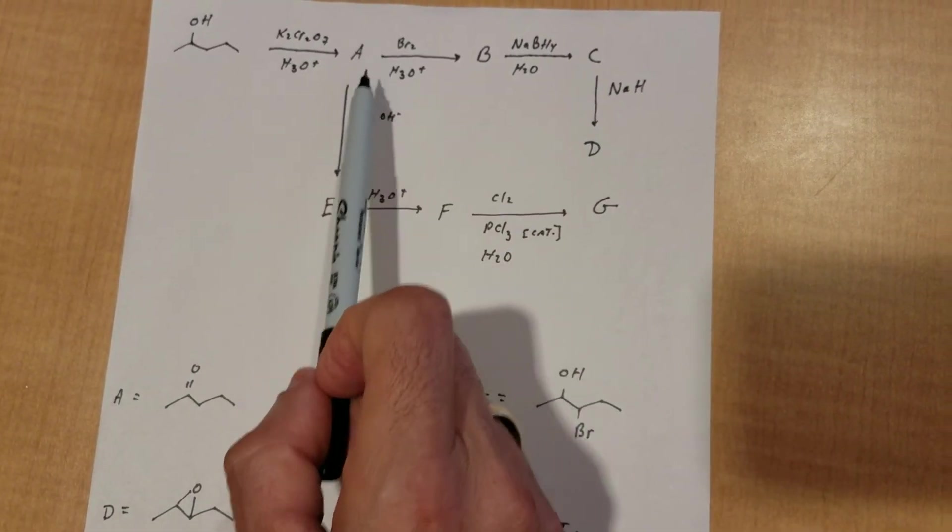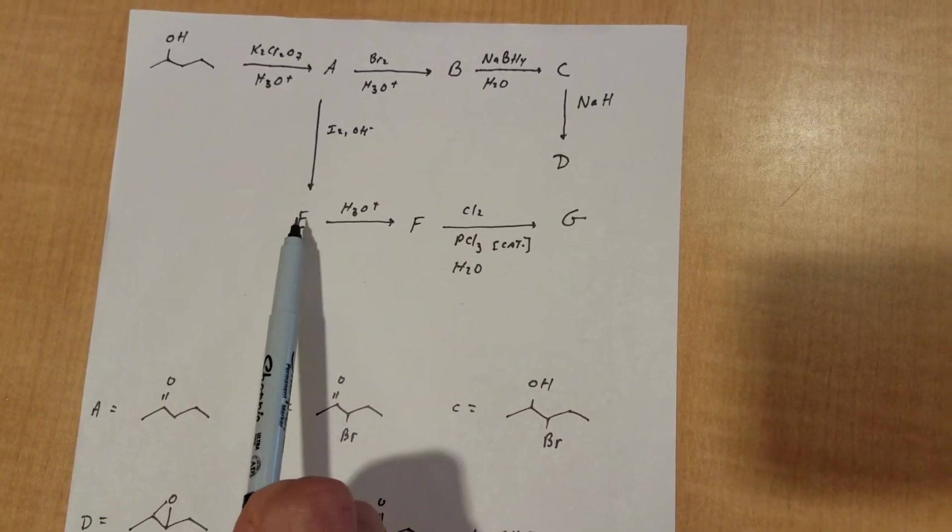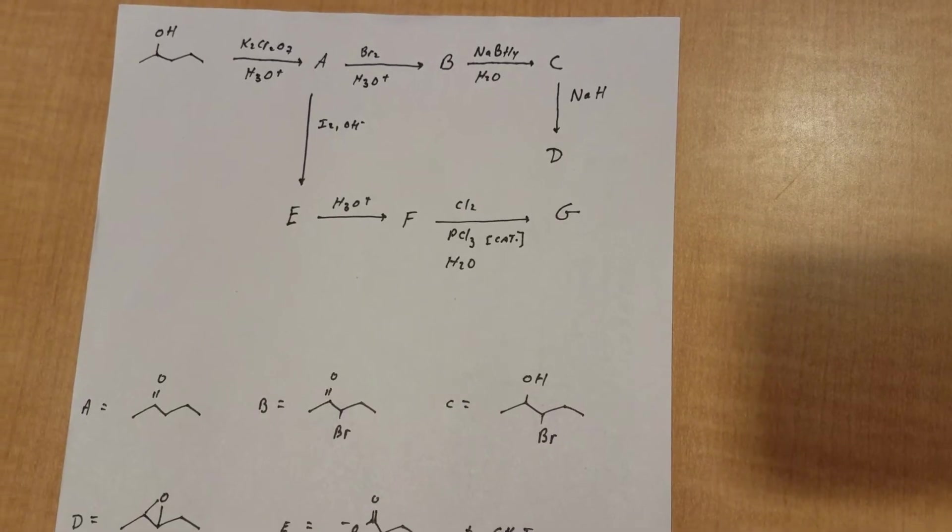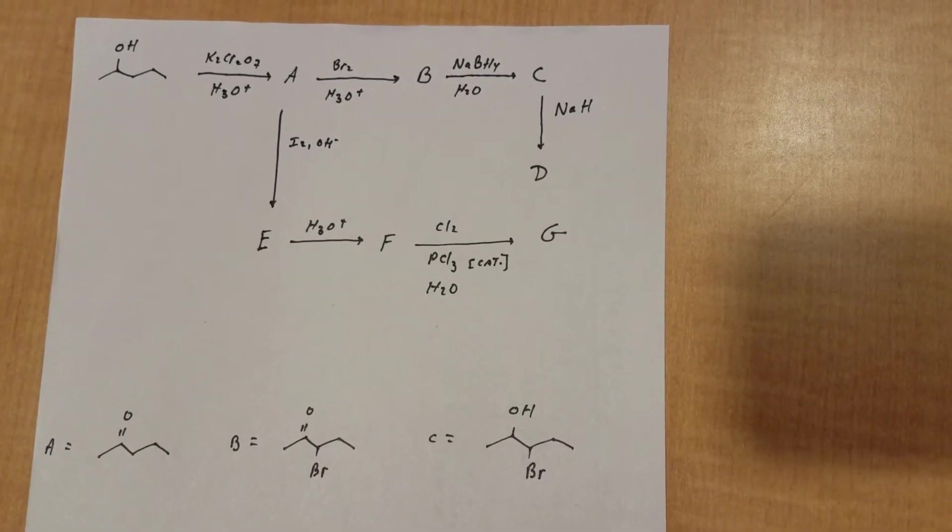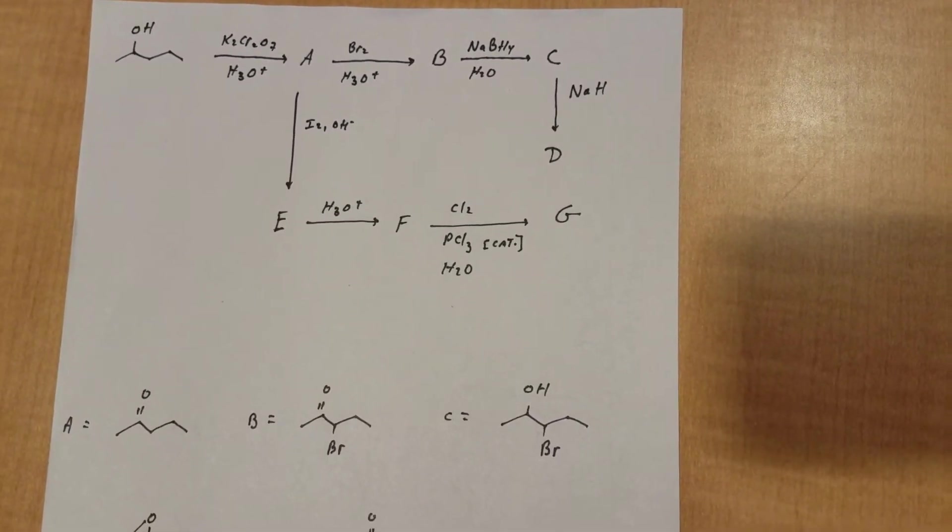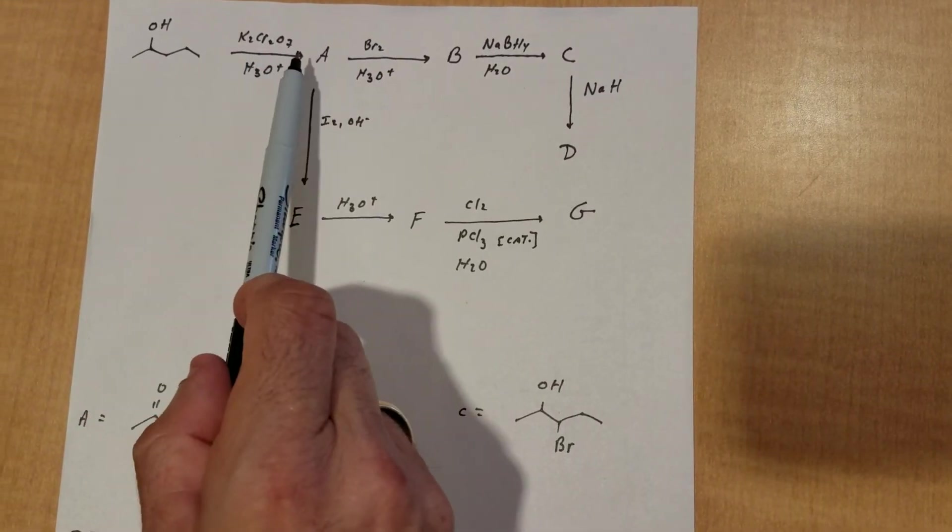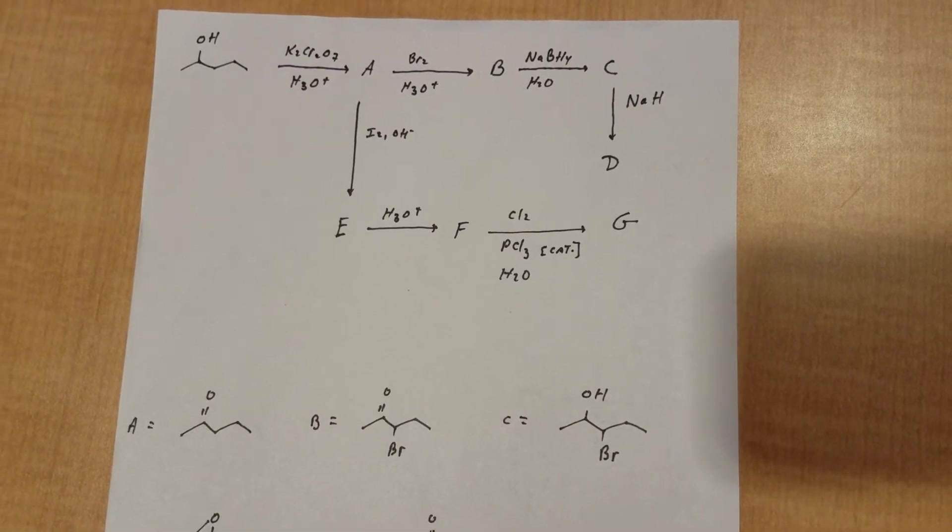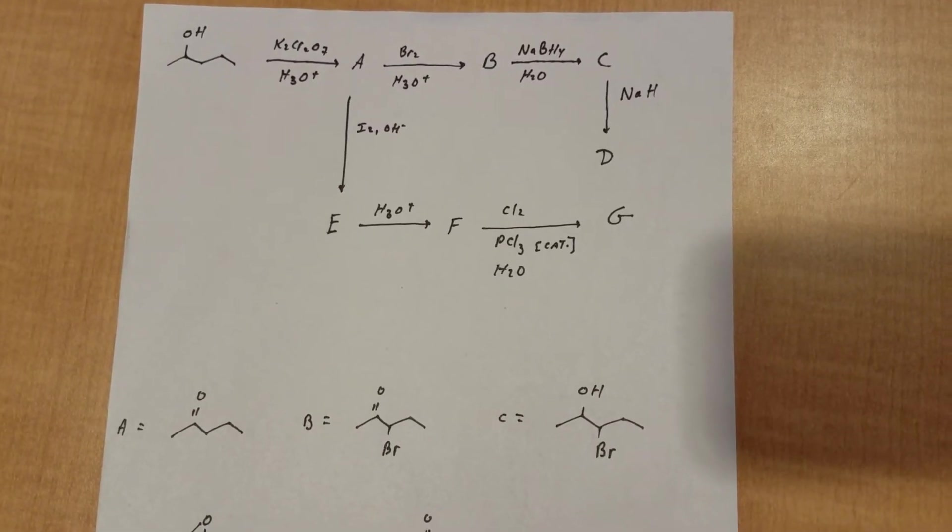I'm going to go back to A, iodine and base to give E, hydrolysis to give F, and then finish it off with chlorine and catalytic PCL3 in aqueous solution. First thing I do is I oxidize the molecule, and hopefully you can all get 2-pentanone. So it's oxidized with potassium dichromate.